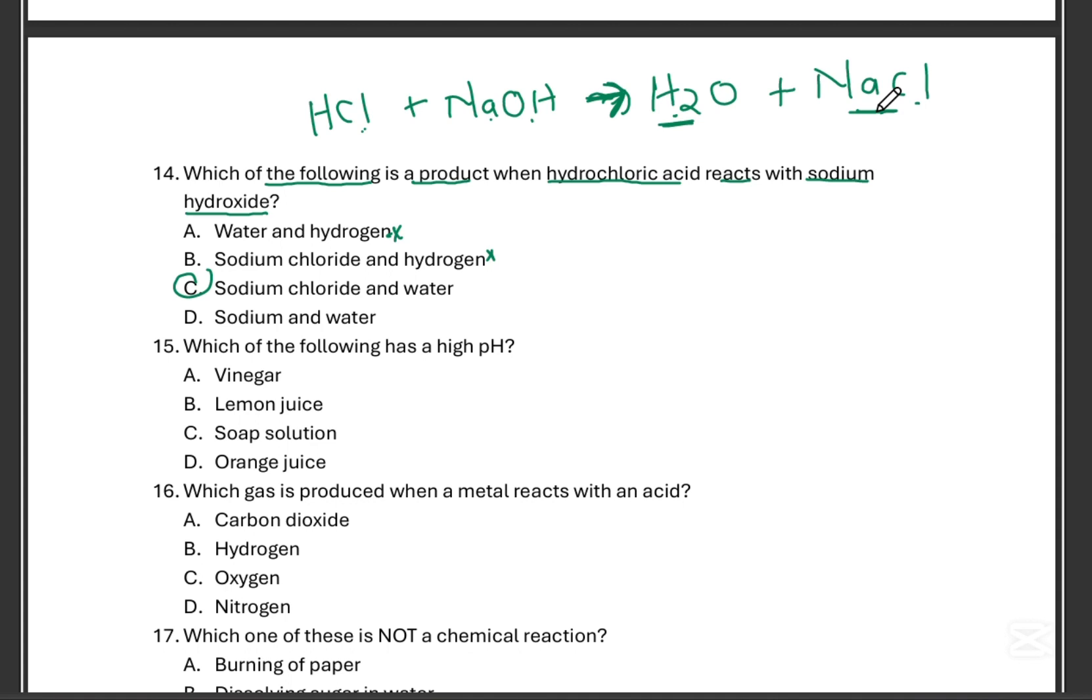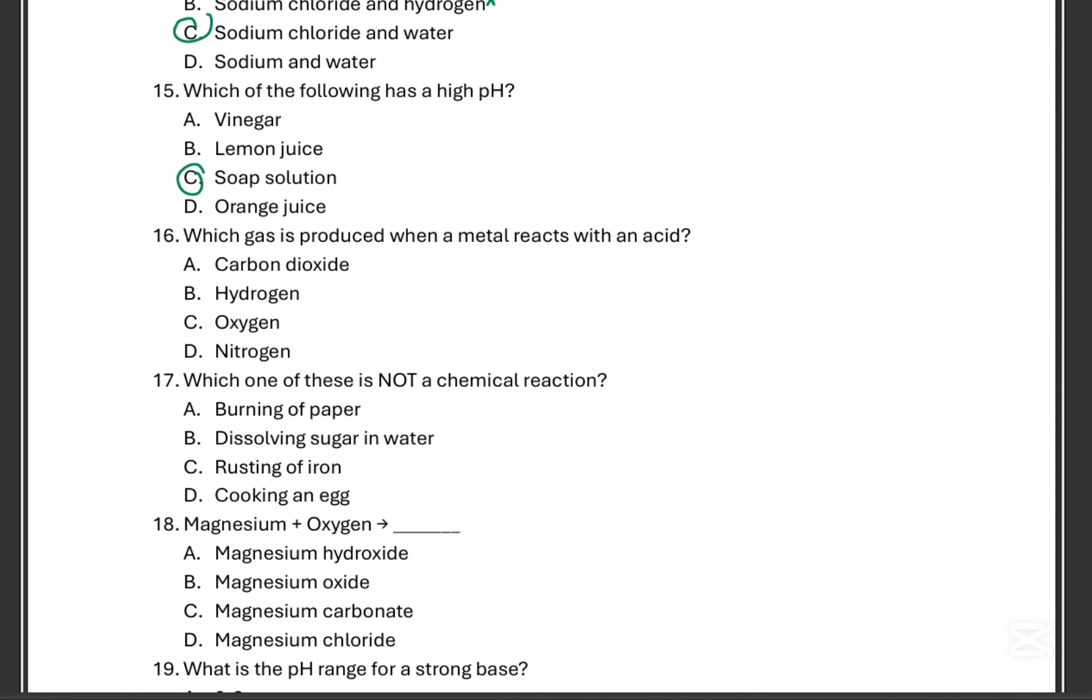15. Which of the following has a high pH? Is it vinegar, lemon juice, soap solution, or orange juice? 15, that is C. Which gas is produced when a metal reacts with an acid? I think we had a similar question, but now which gas is produced when a metal reacts with an acid? For 16, we are having the hydrogen as the gas produced.